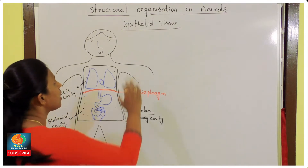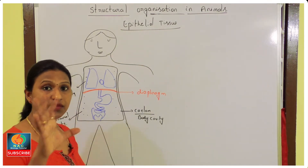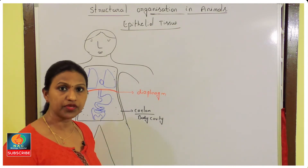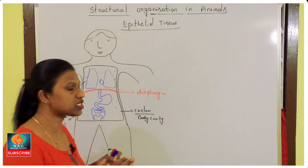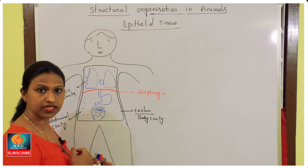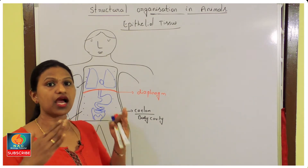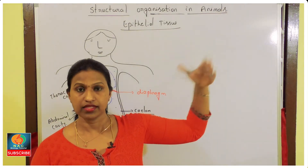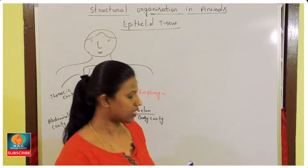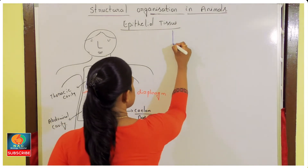As we are talking about the epithelial tissue, it is called a covering tissue because it covers organs both externally as well as internally. Externally means the organ which faces the air, that is outside the environment. Let me give you some examples so that you can easily understand.